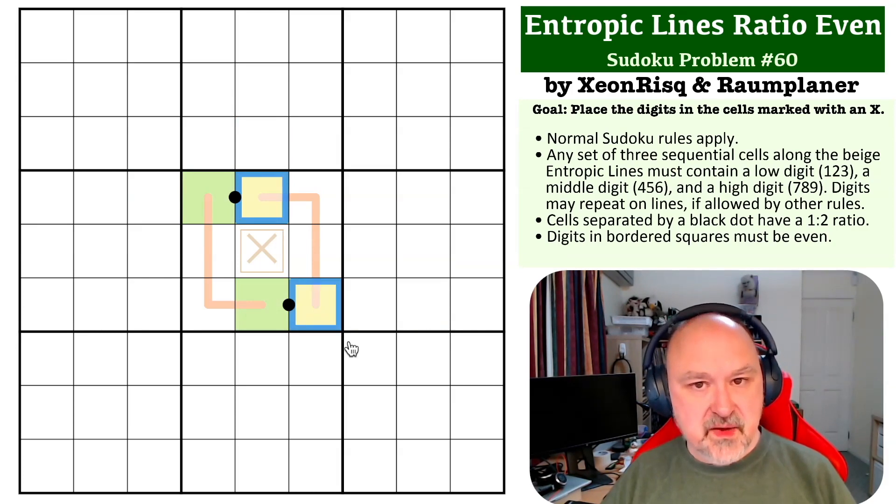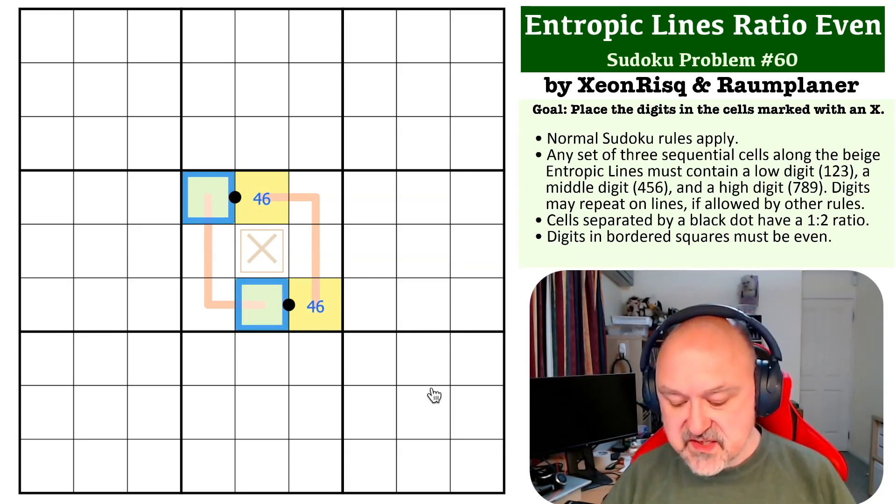So one of these is going to be medium, and the only two medium digits you can put on is four, six. And one of these is going to be low, which is going to be, well, because it's four, six, it's going to be three and two, but that's not what's relevant here.